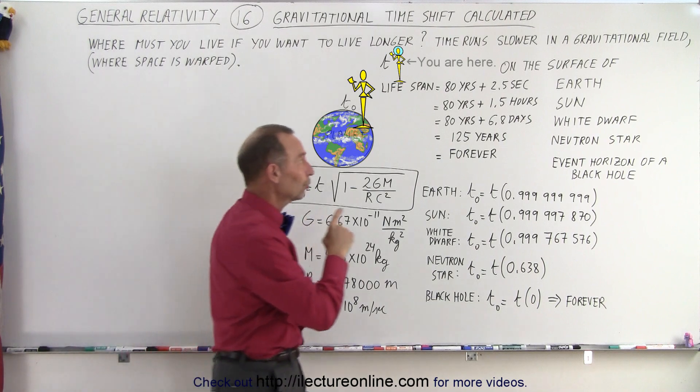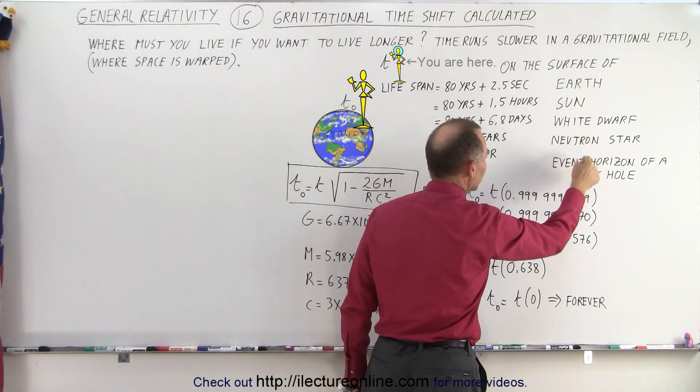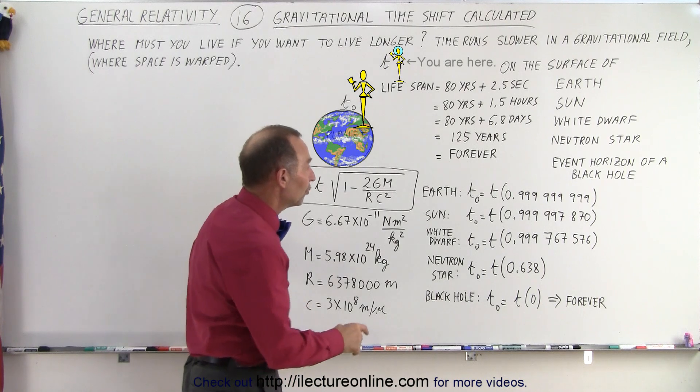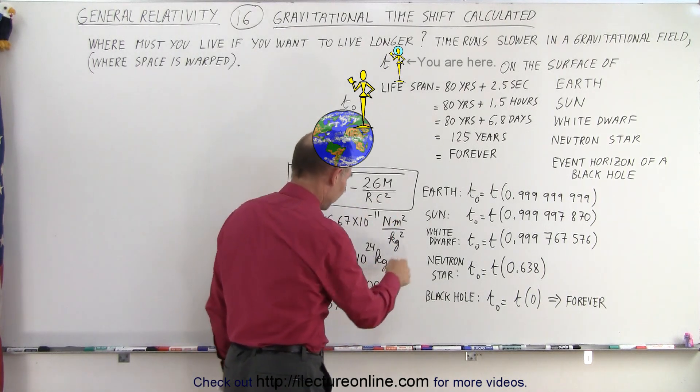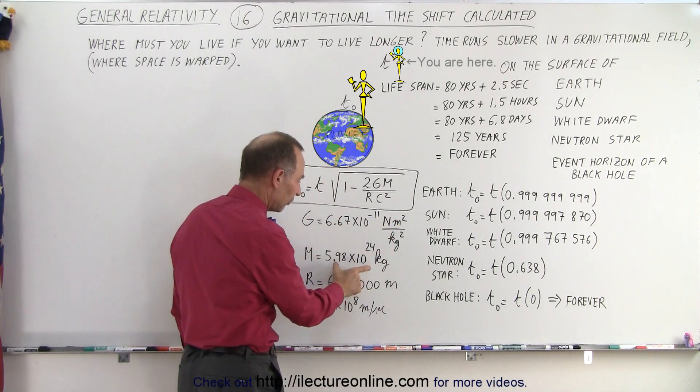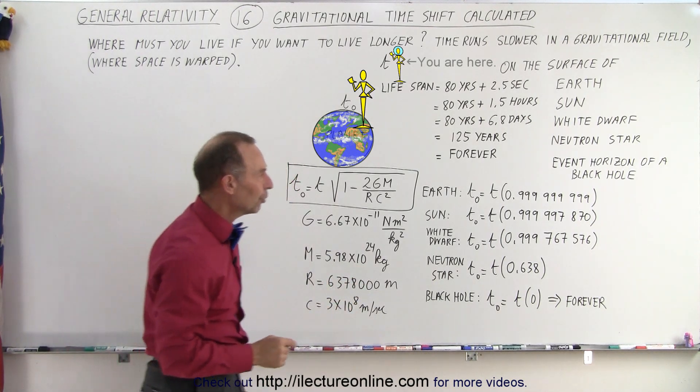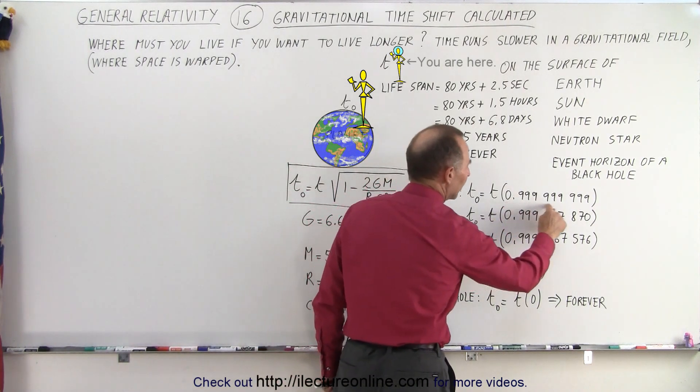Now, take a look. We're going to look on the surface of the Earth, the Sun, a white dwarf, a neutron star, and the event horizon of a black hole. Notice, when you calculate this, you plug in all the values, and I plug in the values for the Earth. Of course, the mass would change, and the radius would change as you go to a different location.